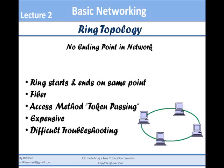This is ring topology. This topology has no ending point — the cable starts from one point, then segment one, second segment, third segment, fourth segment, and the circle continues. There is no ending point. In this type of topology, we use fiber optic cable, which is the fastest cable in the networking world.